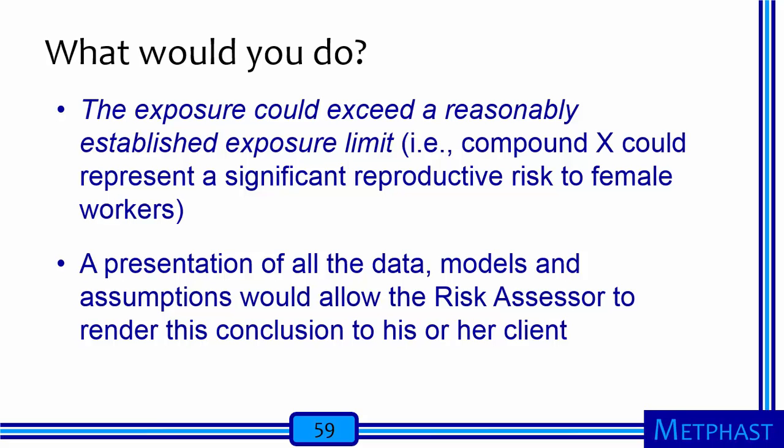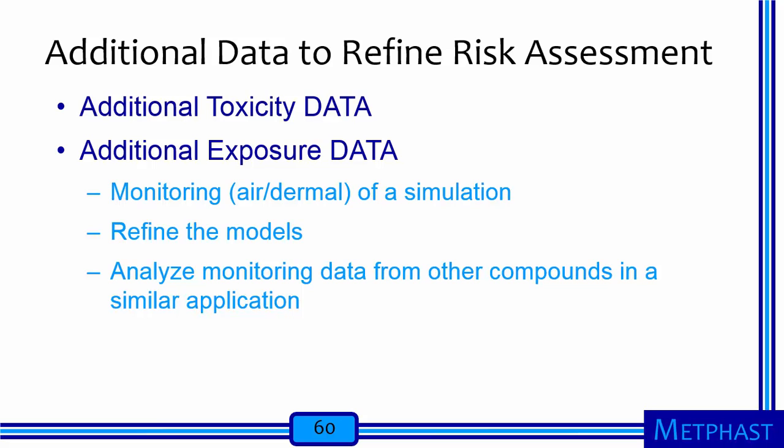If this conclusion is satisfactory to the client, then no further work is needed. If, however, this conclusion is not satisfactory, then the risk assessor should discuss options to reduce the uncertainty and the concomitant conservatism that went with it. Some of the additional data needed to refine the risk assessment are additional toxicity data — which is, of course, very time-consuming to obtain. The risk assessor could also obtain additional exposure data through monitoring, simulation, by refining the models, or by analyzing monitoring data from other compounds in a similar application.